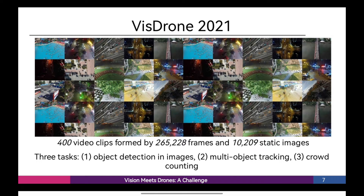The challenge mainly focuses on three tasks. Task 1: Object Detection Challenge — the task aims to detect objects of predefined categories, for example cars and pedestrians, from videos taken from drones. Task 2: Multi-Object Tracking Challenge — the task aims to recover the trajectories of objects in each video frame. Task 3: Crowd Counting Challenge — the task aims to count vehicles and people in each video frame. The scope of the workshop comprises all aspects of image and video analysis with respect to drone platforms, including but not limited to the following topics.